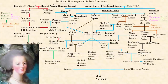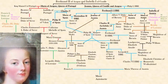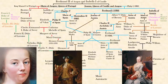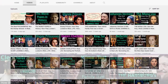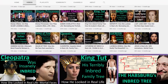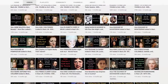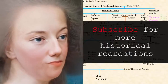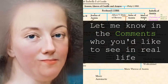I tweaked Marie Antoinette's face to incorporate her petite Habsburg chin, which was thought of as adorable, and I recreated her parents. Here on Mortal Faces I have more inbred family trees and recreations of famous historic people to see how they might have looked in real life. We're almost at a hundred thousand subscribers — subscribe for more historical recreations and let me know in the comments who you'd like to see.